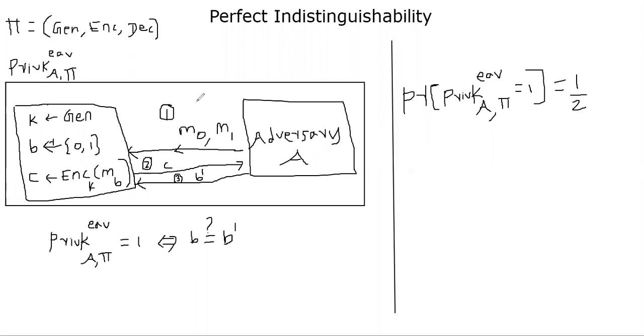Okay, so we have a key generation algorithm, which I denoted by gen, and then we have encryption and decryption. These three things together is the encryption scheme, right? That's denoted by pi.